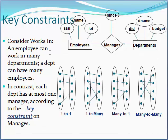Regarding key constraints of the entity relationship model: consider 'works in' — an employee can work in many departments, and a department can have many employees. In contrast, each department has at most one manager according to the key constraint on managers. You can see in this diagram that employees can manage a department.